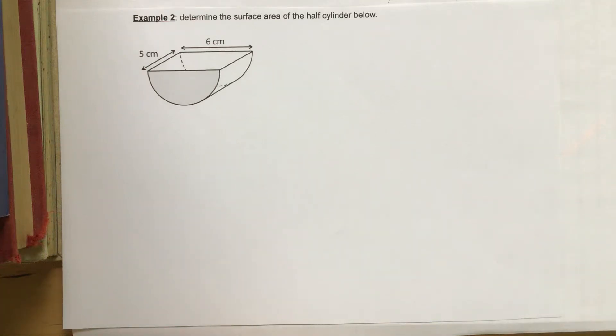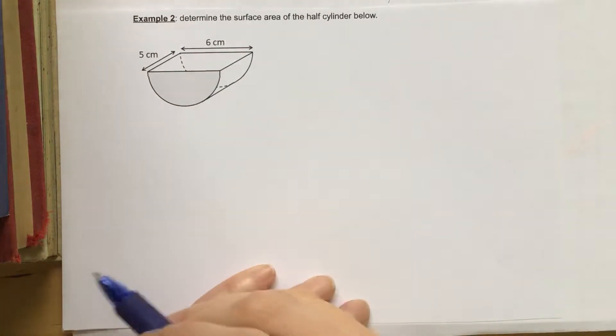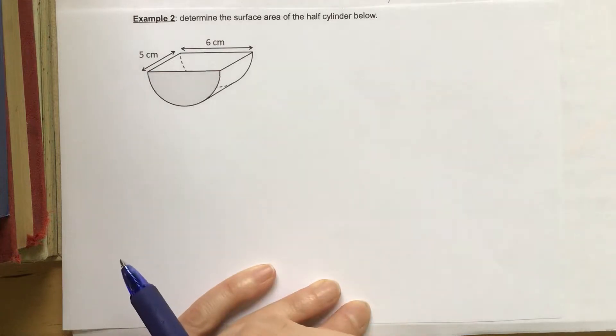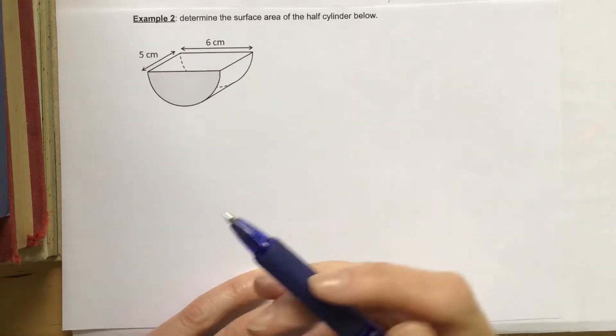In this example, we're going to be determining the surface area of the half cylinder that's given here below. So we have some parts of the cylinder already, or the half cylinder, already labeled, but let's just identify them.